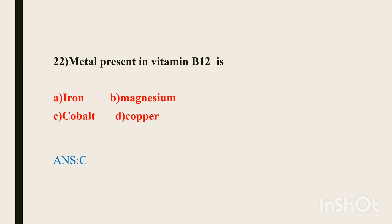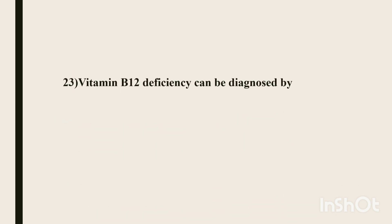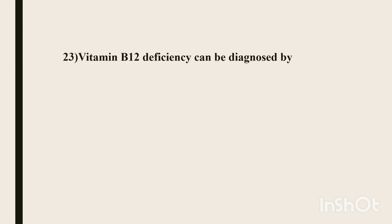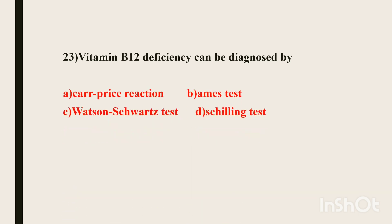Twenty-third question. Vitamin B12 deficiency can be diagnosed by which test? Options include Carr Price reaction, MS test, Watson's quads test, Schilling's test. The Carr Price reaction is used to estimate vitamin A. For vitamin B12 deficiency, Schilling's test is used.